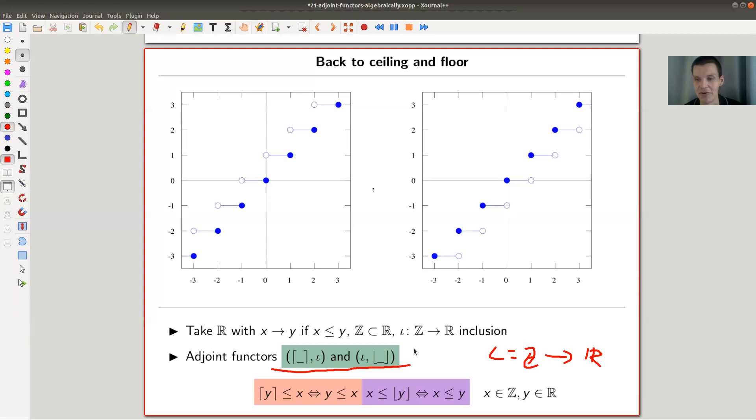So remember, iota is the inclusion from Z to R. And apparently, the ceiling function is the left adjoint. And the floor function is the right adjoint. If you will work it out, you will see that this is exactly the case.